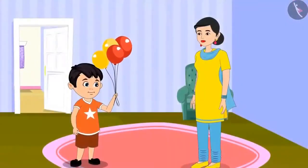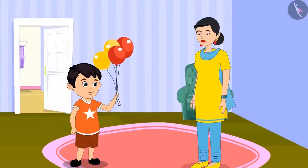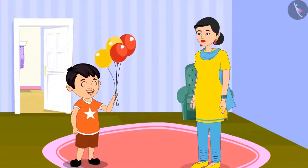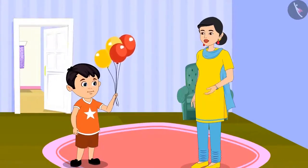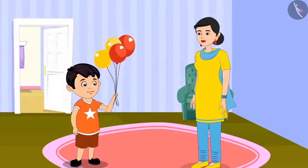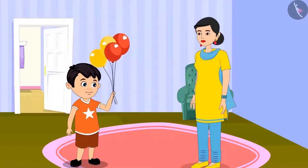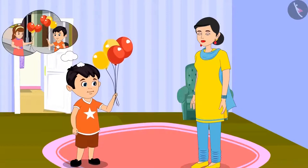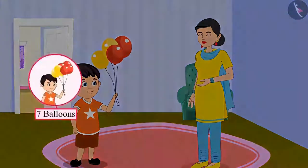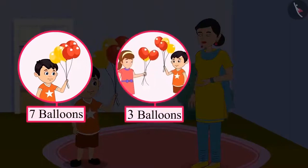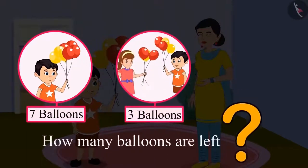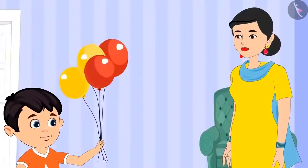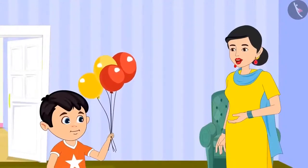Then after reaching home, he shows all the balloons to his mother. Mummy, I got these balloons to play with from Sonu's birthday party. His mother asks how many balloons he got. Chotu explains: I got seven balloons from the party, but on the way I met Aarti and I gave three balloons to her. His mother asks how many balloons are left, and Chotu answers: I have four balloons left with me. Very good, Chotu. You are absolutely right.